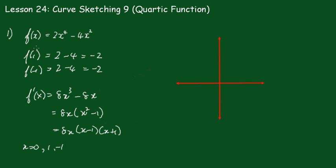So the points are when x equals 0, y equals 0, so we have the point here which is 0, and we have the other points which are 1, negative 2, and minus 1, negative 2.